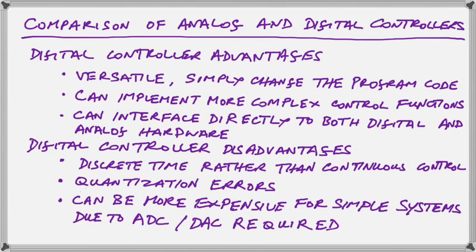The digital controller also has its disadvantages because it's not suitable for continuous control in most cases. Of course, we can raise the sample frequency, increase the sample size, and reduce the quantization errors to any desired level, and in that case it begins to approximate a continuous control system.